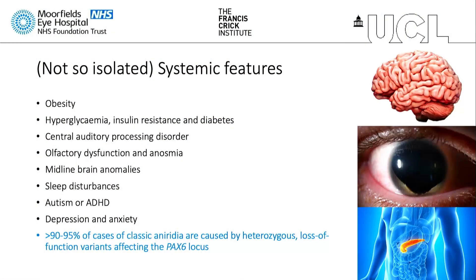There is also a wealth of systemic features that we don't tend to mention much, but our aniridia patients suffer from weight problems, obesity, hyperglycemia, insulin resistance, diabetes, central auditory processing disorder, olfactory dysfunction, anosmia, midline brain anomalies, sleep disturbance, autism, ADHD, depression, and anxiety. We mustn't forget these systemic features.